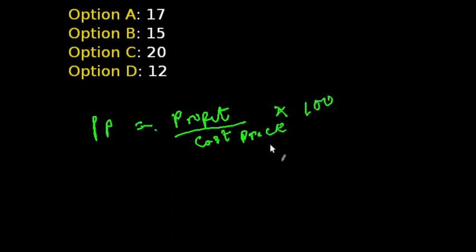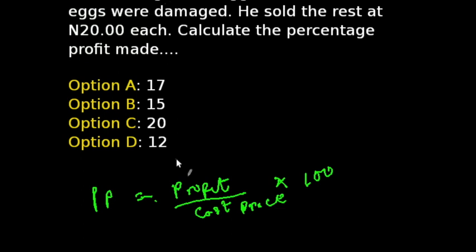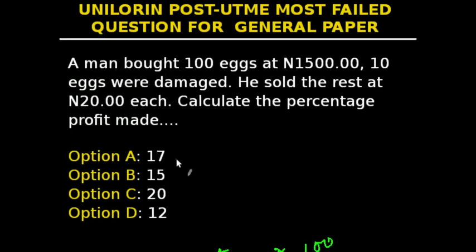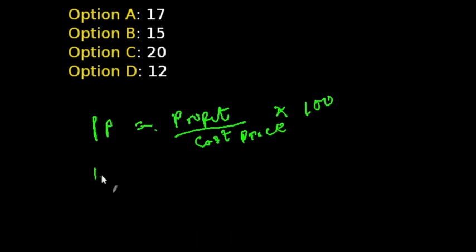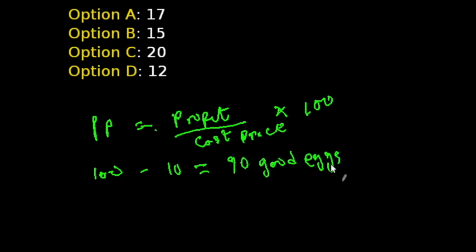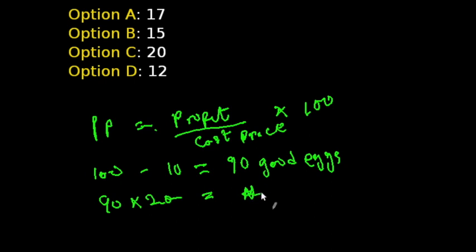We are going to use that formula to solve this question. First, we need to get the number of eggs the man sold. He bought 100 eggs but 10 were bad, so 100 minus 10 gives us 90 good eggs. Next, we find the price of the 90 eggs he sold. He sold each egg for 20 Naira, so we multiply 90 by 20, which gives us 1,800 Naira.